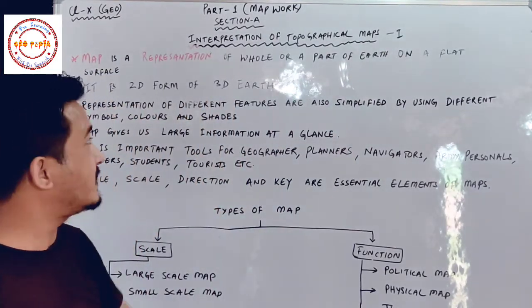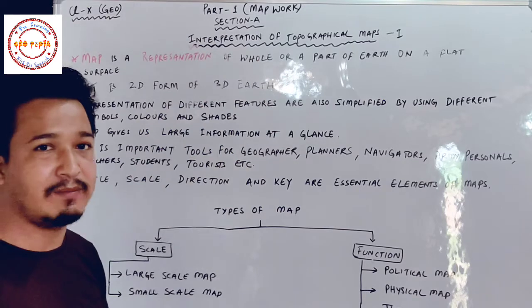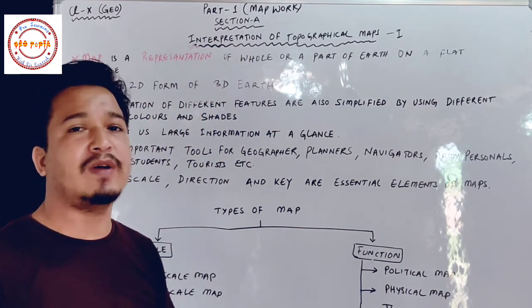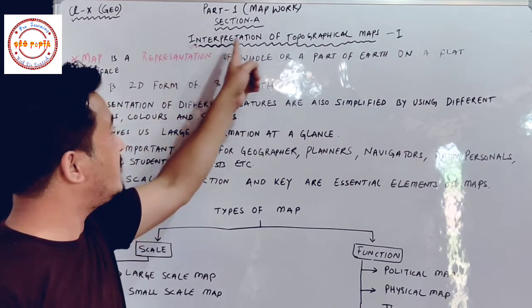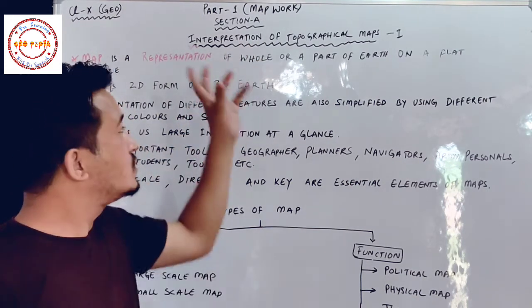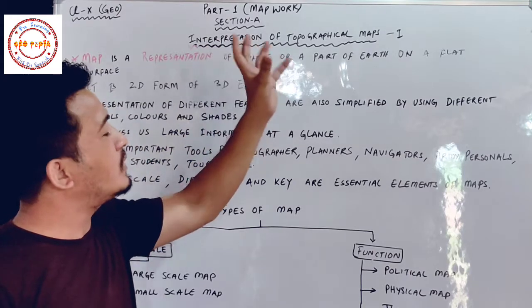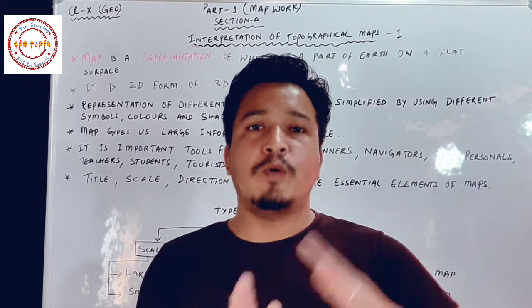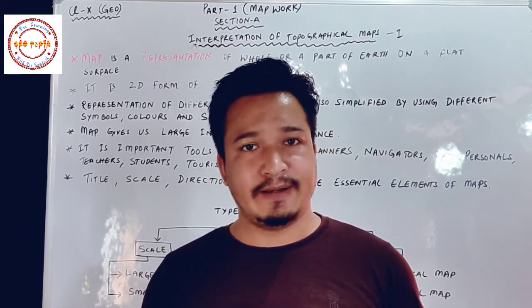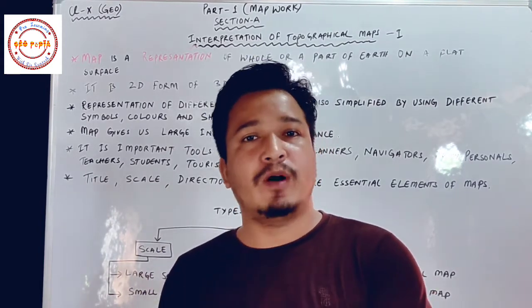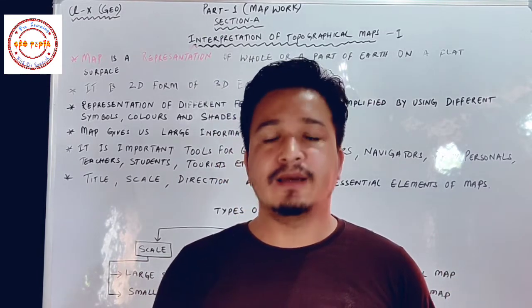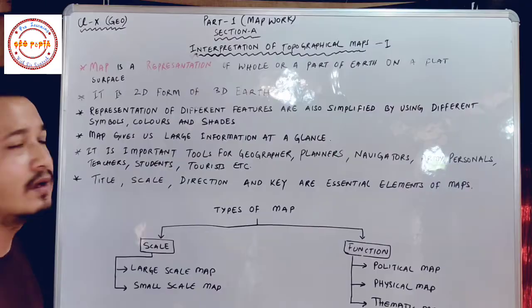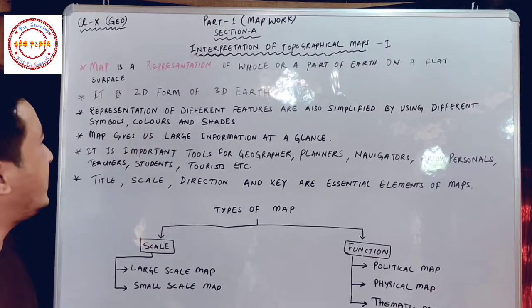Before starting this chapter on interpretation of topographical maps, let us understand the meaning of interpretation. In simple words, interpretation means explanation — so here we are explaining topographical maps. Topographical maps are explained with the help of some symbols, colors, grids, etc. Now let us see the definition of a map.